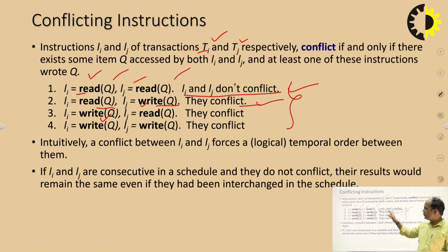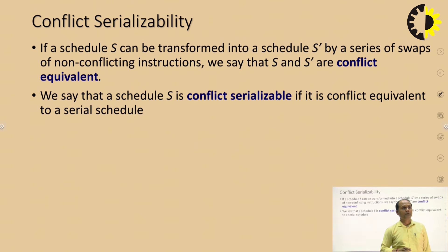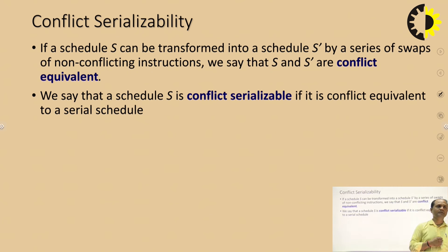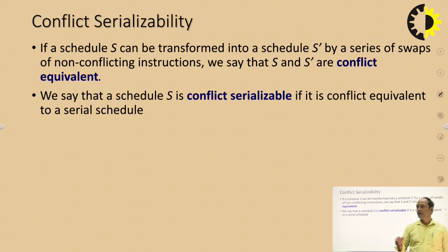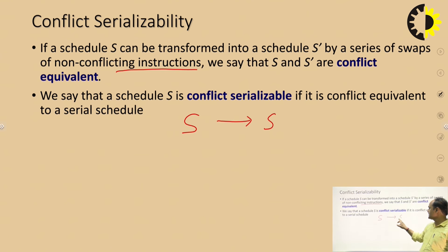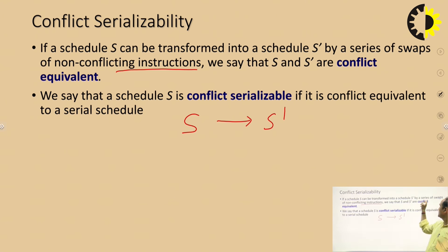These are the four conflicting instruction conditions that can arise in a particular transaction. Now, how do we calculate conflict serializability and how can we detect it? In conflict serializability, if a schedule S can be transformed into a schedule S' by a series of swaps of non-conflicting operations, then both schedules are conflict equivalent.